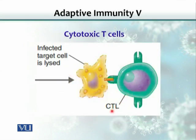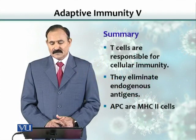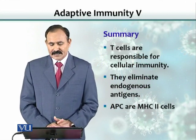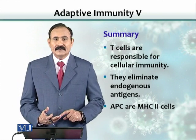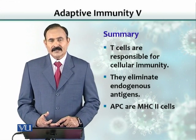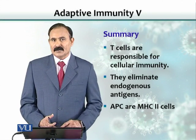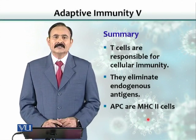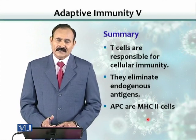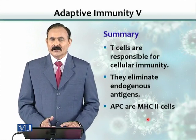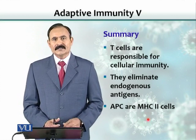This is a CTL — cytotoxic T lymphocyte — which kills virally infected cells, releasing viruses outside, where antibodies can take care of them. In summary, T cells are responsible for cellular immunity and can eliminate endogenously developing antigens — those developing inside cells. They destroy cells harboring antigen that is not accessible to antibodies. APCs are the only MHC class 2-expressing cells: macrophages, dendritic cells, and B lymphocytes, which present antigen along with MHC class 2 molecules to create immunity and antibody production in the body.